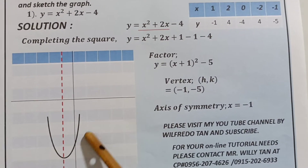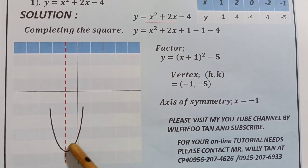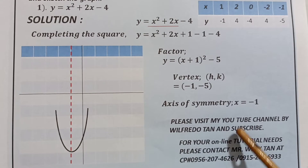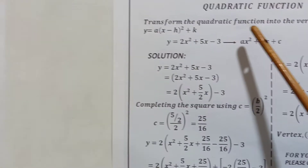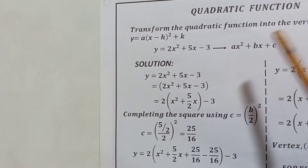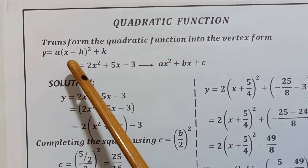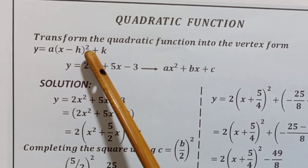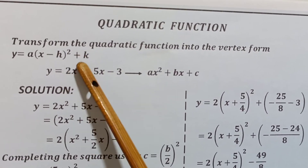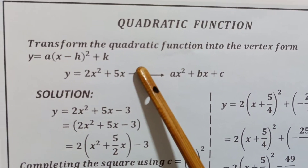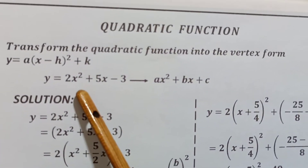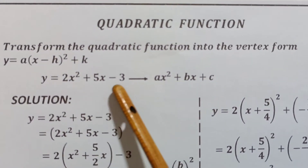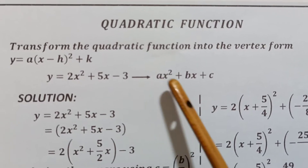We go to our second problem. We're also asked to transform the quadratic function to the vertex form: y is equal to a times the quantity x minus h, squared, plus k. The given equation is 2x squared plus 5x minus 3.